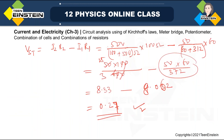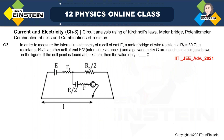Now we'll go to the next question — a nice question related to the measurement of internal resistance using a meter bridge. Actually, it is a potentiometer — sorry. In order to measure the internal resistance R1 of a cell with EMF E, using a meter bridge which has a one-meter-long wire with resistance 50 ohm for 100 centimeter.